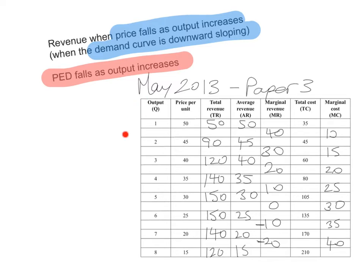Here, the levels of output go from one unit all the way up to eight units, and the price per unit decreases as you produce more, because this is a regular downward sloping demand curve. Multiply price by quantity to get total revenue: 1 × 50 = 50, 2 × 45 = 90, 7 × 20 = 140, and so on. Average revenue is total revenue divided by quantity, which equals the price — so average revenue and price are exactly the same. Marginal revenue is the change in total revenue over the change in quantity: for example, (90 − 50) ÷ (2 − 1) = 40, and (150 − 140) ÷ (5 − 4) = 10.